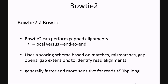Now we are ready to discuss Bowtie 2. Remember, Bowtie 2 is not the same as Bowtie. Bowtie 2 can perform gapped alignments and has two alignment settings: local and end-to-end. Bowtie 2 uses a scoring scheme based on matches, mismatches, gap opens, etc., to identify valid read alignments. Bowtie 2 is considered to be faster and more sensitive for reads of 50 base pairs or greater when compared to the original Bowtie.